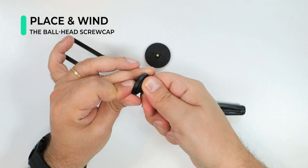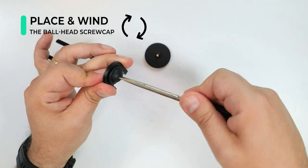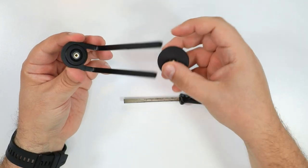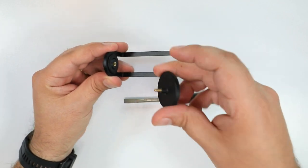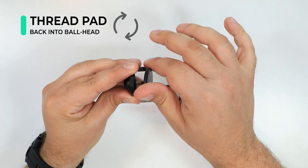Tighten it with the screwdriver and then screw the pad back into the ball head. Be mindful to screw it in straight to ensure you don't damage the screw threads.